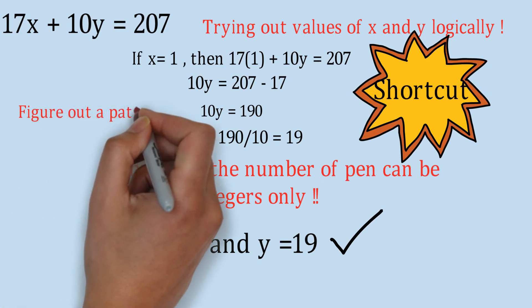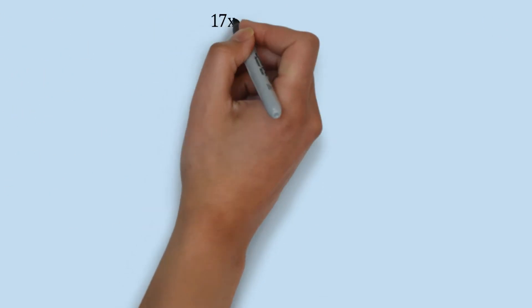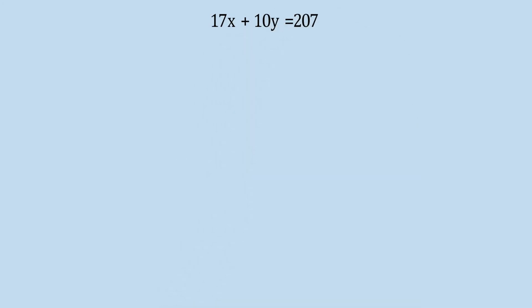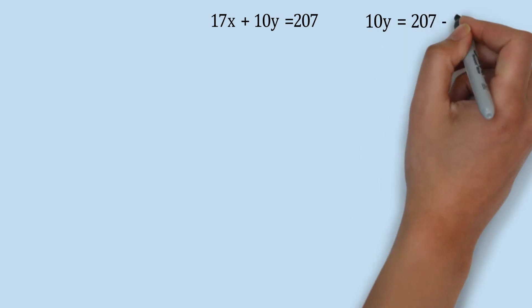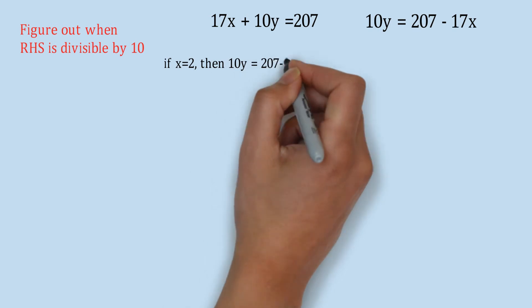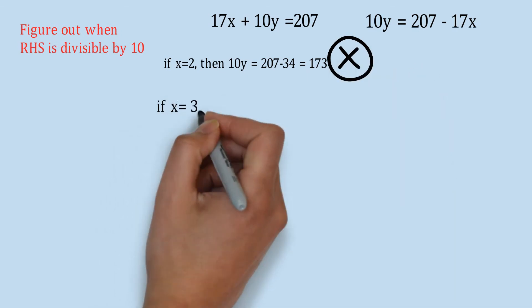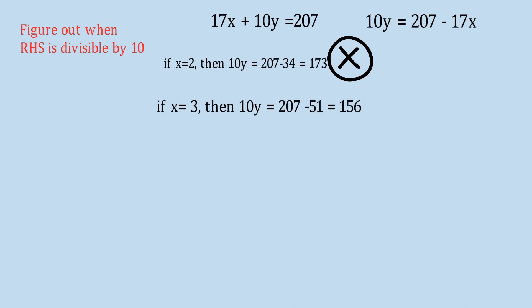Looking at the left-hand side: 17x plus 10y equals 207, so 10y equals 207 minus 17x. The key is to find when the right-hand side is divisible by 10 - whenever it is divisible by 10, we have a valid combination. If x equals 2, then 10y equals 173 - not divisible by 10. For x equals 3, the right-hand side is 156 - also not divisible by 10. For x equals 4, it becomes 139 - not possible.